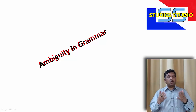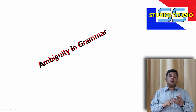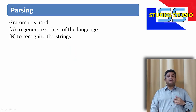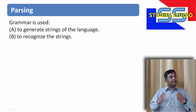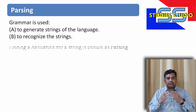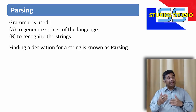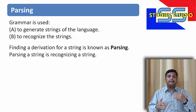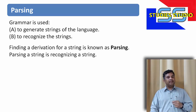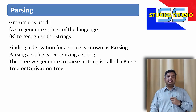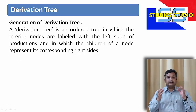In our previous video, we have already discussed about what is grammar, what is context free grammar, and how to represent a context free grammar. In this video, we are going to talk about ambiguity. But before we start, just take a recall. Why is grammar used? Basically, grammar is used to generate the strings in a language and it is also used to recognize the string. Finding the derivation of a string is known as parsing, and parsing a string means recognizing a string. So when we use a tree structure to generate a string, it is called a parse tree or a derivation tree.